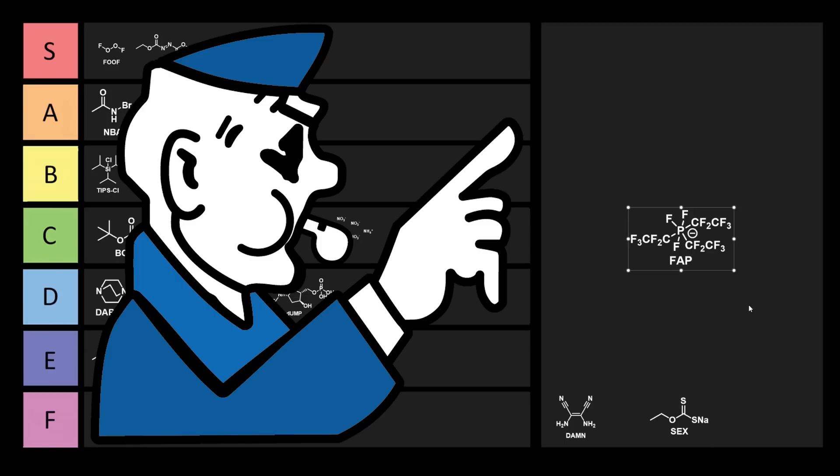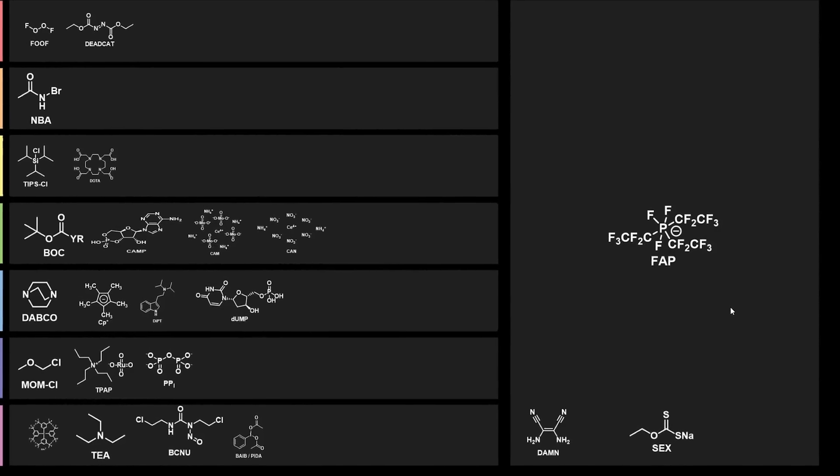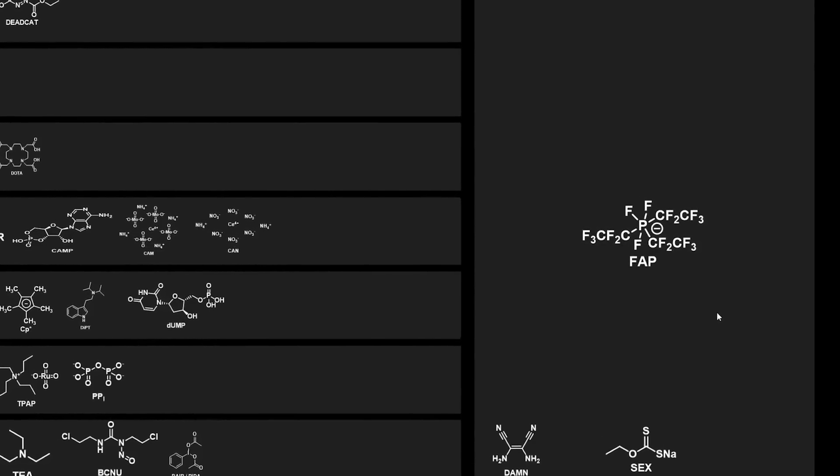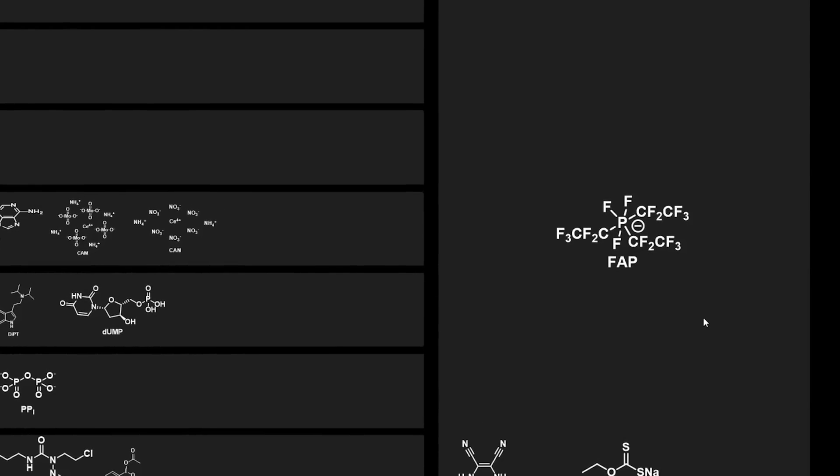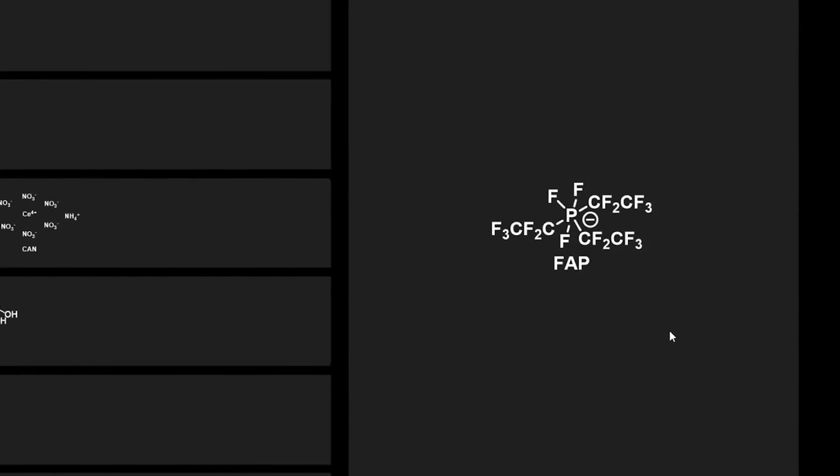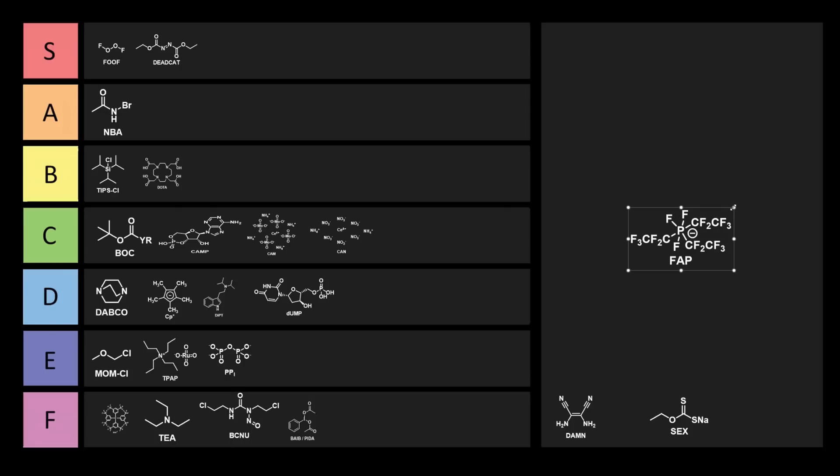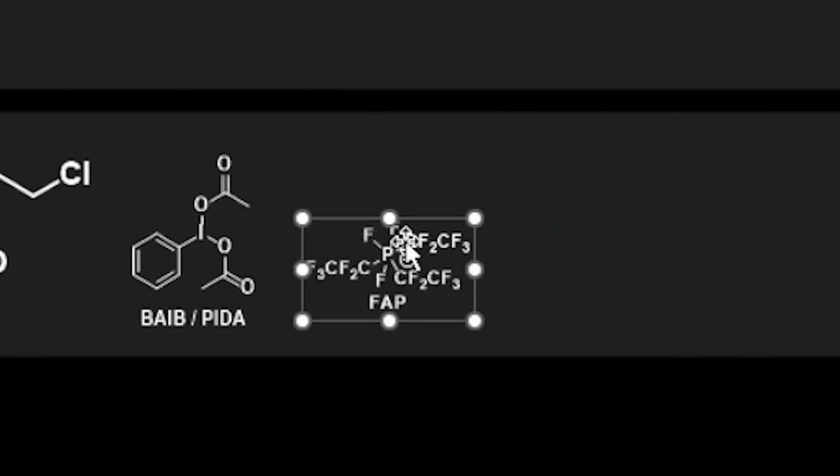Next we have FAP. No, not you silly. Stop it. This is tris(perfluoroalkyl)trifluorophosphate, and FAPs have been a component of ionic liquids. I quote: FAP ionic liquids show an excellent hydrolytic stability, low viscosity, and high electrochemical and thermal stability that makes them attractive for use in electrochemical devices and as a new media for application in modern technologies and chemical synthesis. I think FAP is 100% going to go into F tier. Plus, with all those fluorines on there, how could we not put it in F tier?